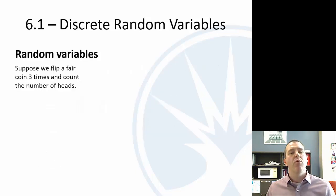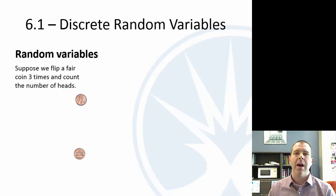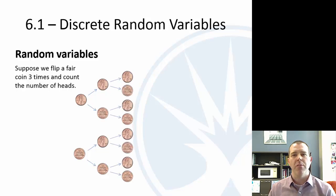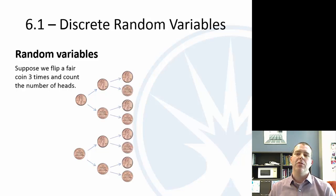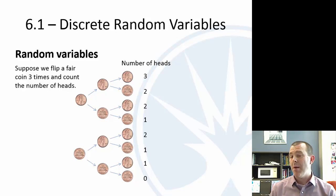So let's talk about a random variable. What is a random variable? Suppose we have a fair coin and we're going to flip it three times and count the number of heads. From each flip, the result could be heads or tails, so if we count the number of heads, we could have 0, 1, 2, or 3 — but not all with the same probability.